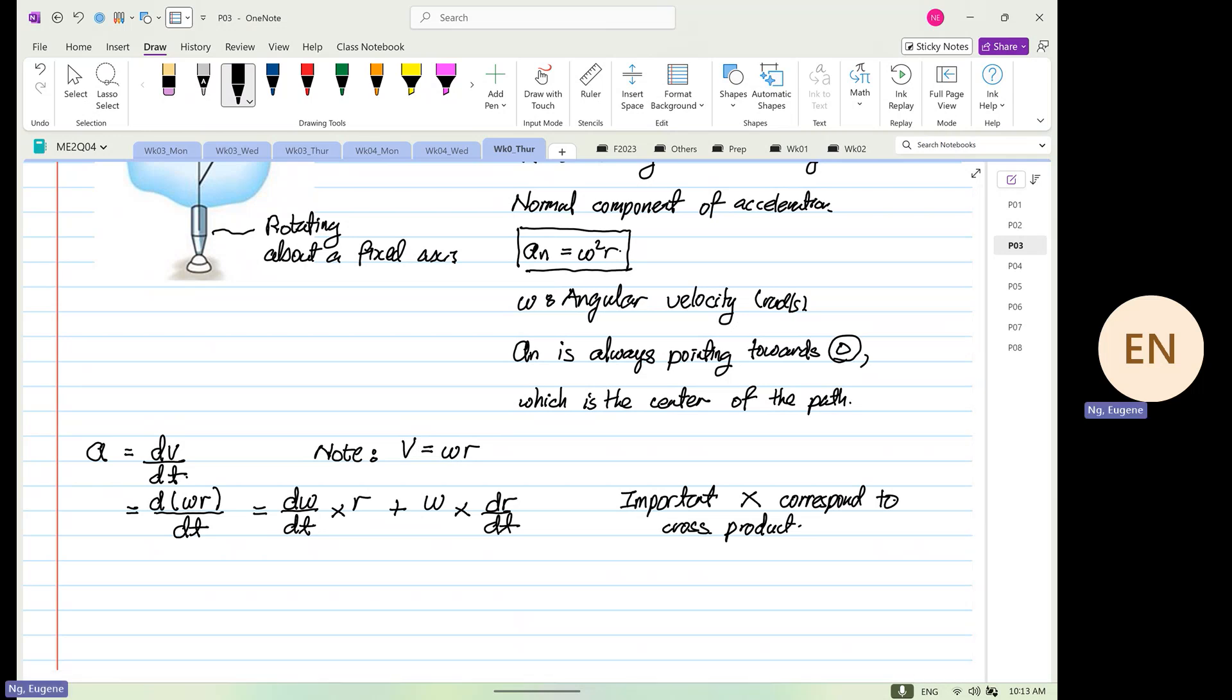So we are aware that d omega over dt is equal to alpha. Right. We know that this is equal to alpha. And we also know dr over dt which is equal to velocity and velocity is also equal to omega cross r.